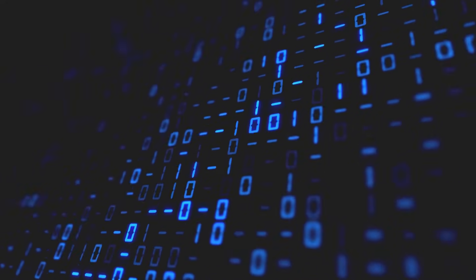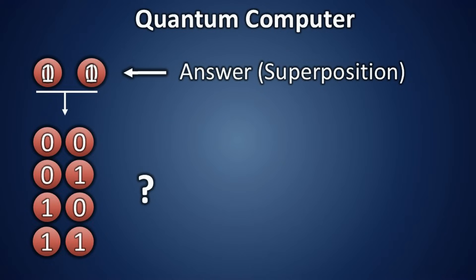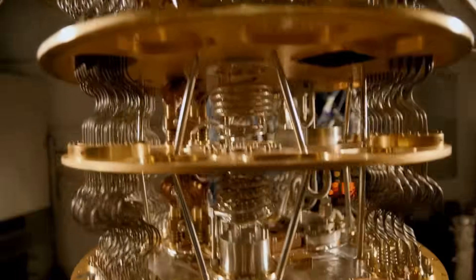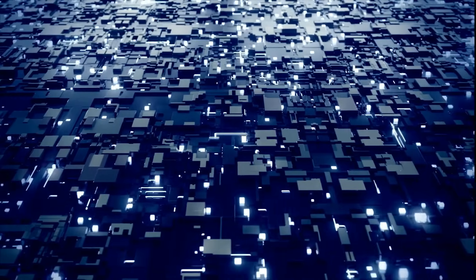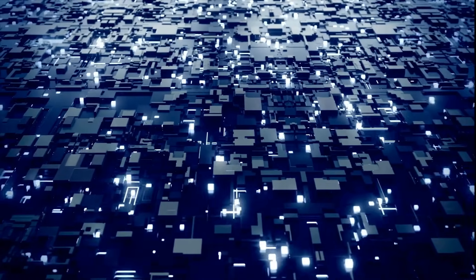However, there is a challenge. The output of such calculation will be a superposition of all possible answers. To extract the correct result, quantum mechanics uses interference to amplify correct answers while suppressing incorrect ones. This method, however, works only for specific types of calculations.